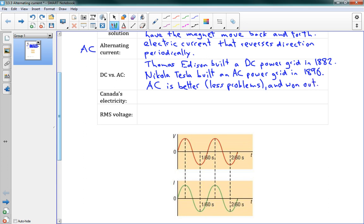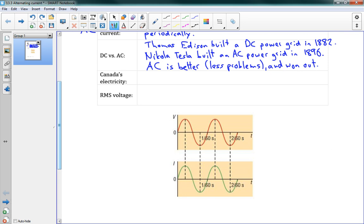If you plug into the wall right now, you're going to be getting AC electricity out of the wall. That is how we get our electricity these days. So, Canada's electricity is AC. It runs at 60 Hz. You notice that it's a sine wave, so that just means that it repeats 60 times per second.